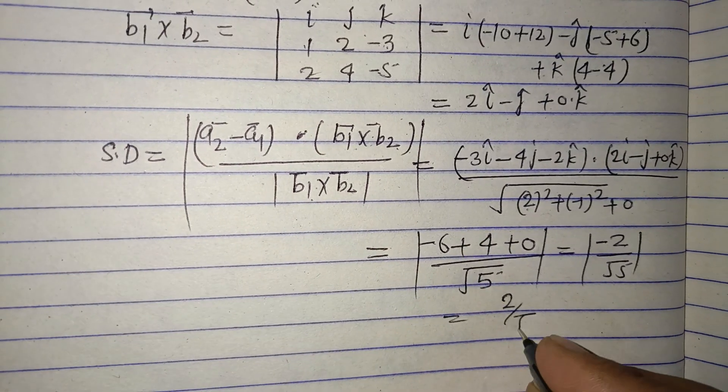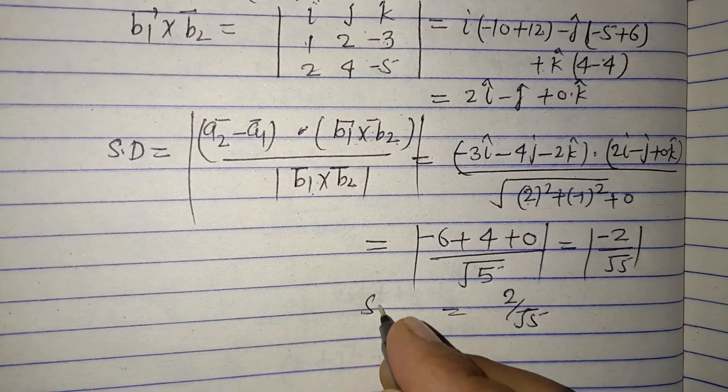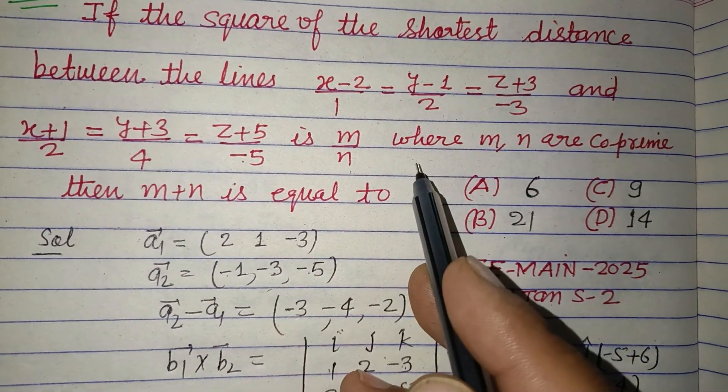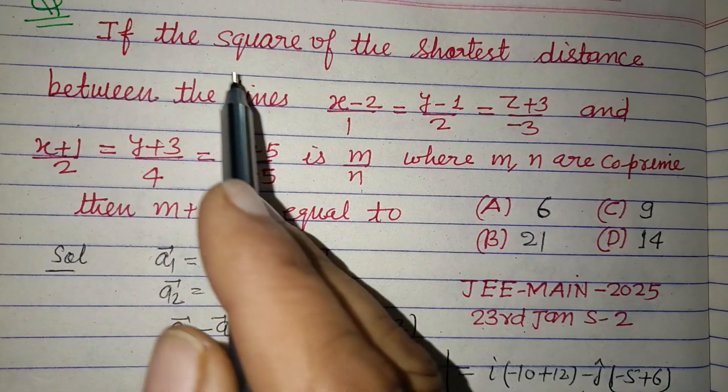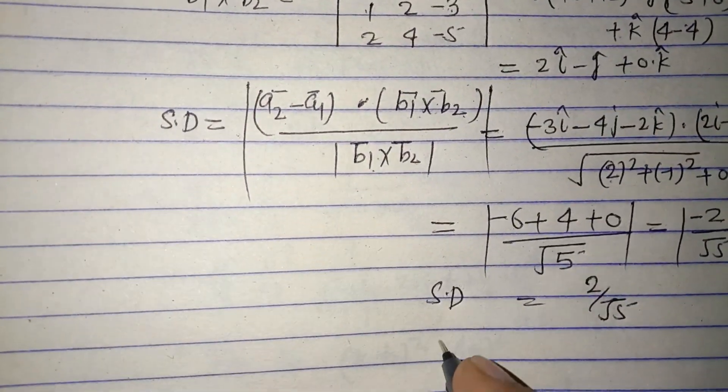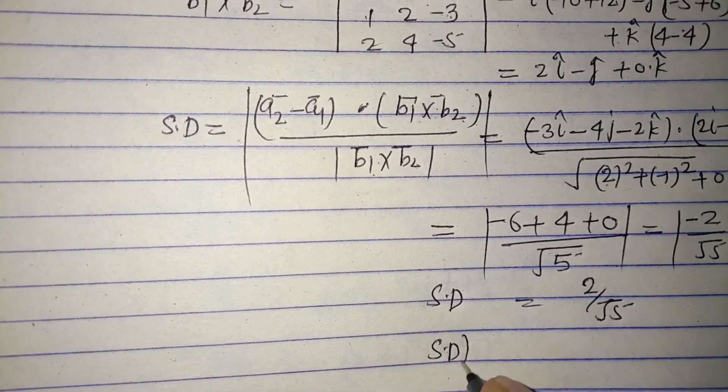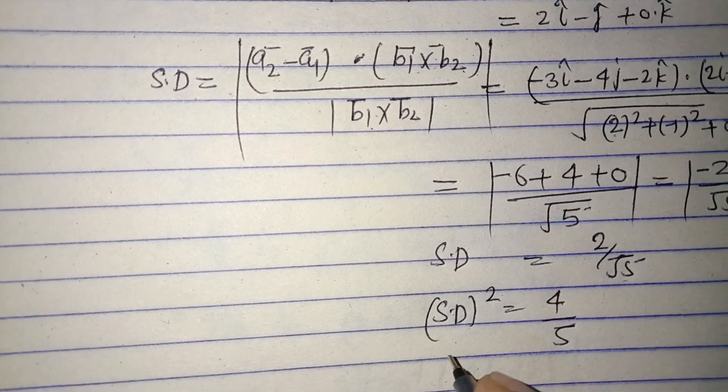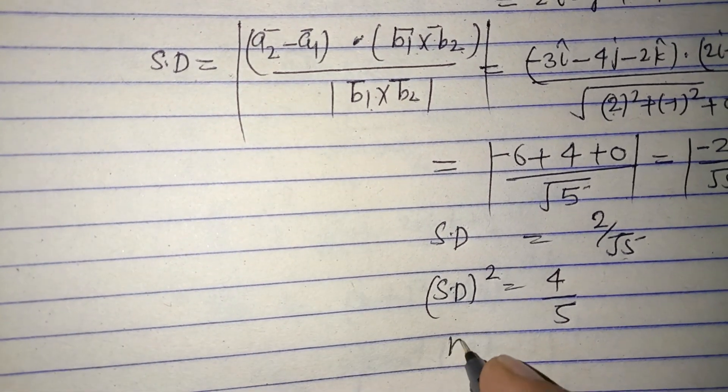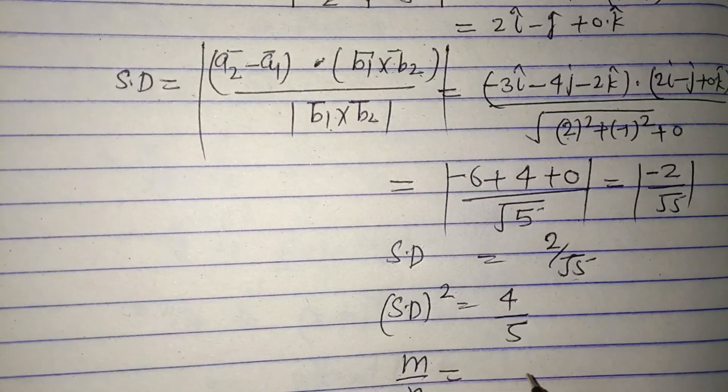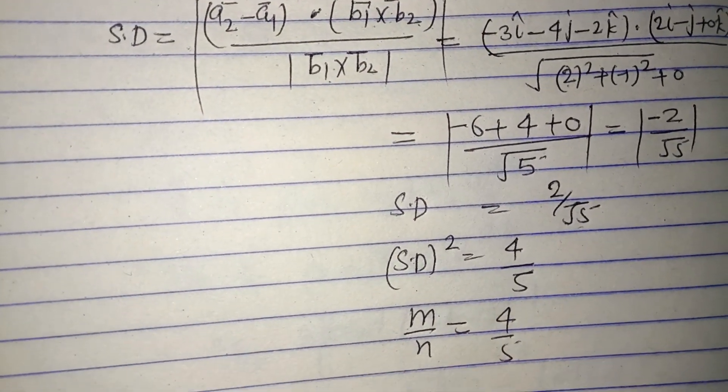Now the question is saying m over n where m, n are co-prime. The square of the shortest distance between the lines is m upon n. So squaring this: SD squared equals 4 over 5, which equals m over n as given in the question.